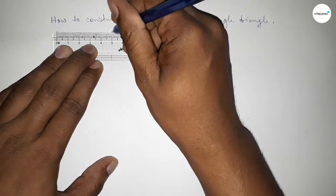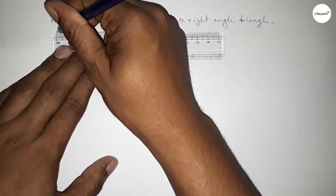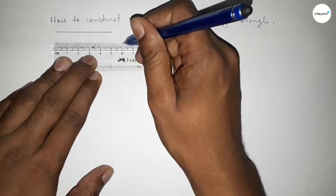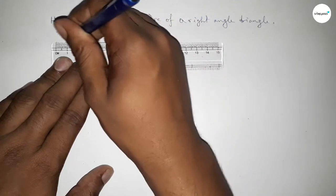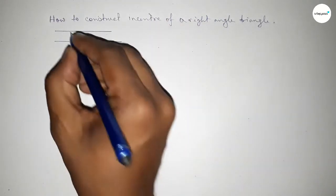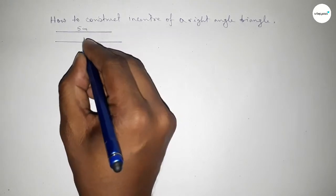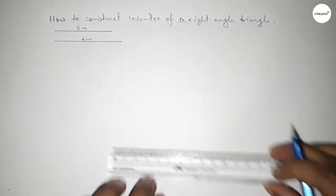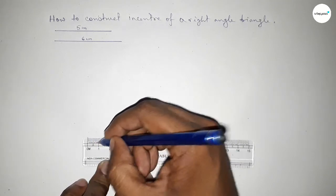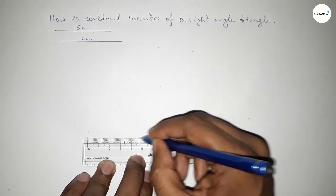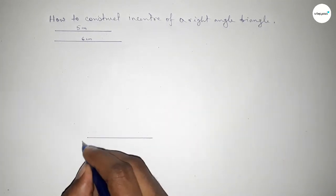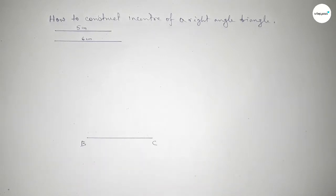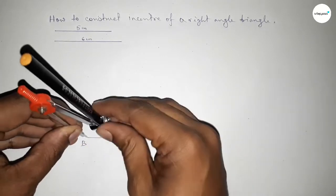First, taking a line of length five centimeters and then taking a second side of six centimeters. So this side is five centimeters and this side is six centimeters. First we have to draw a line of length six centimeters, taking here point B and here point C.